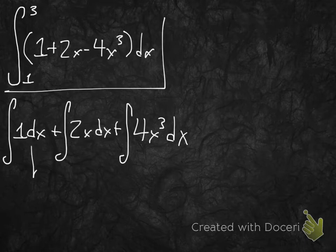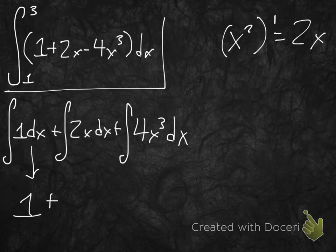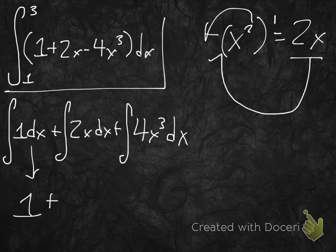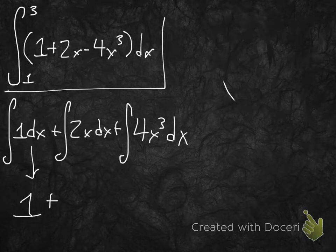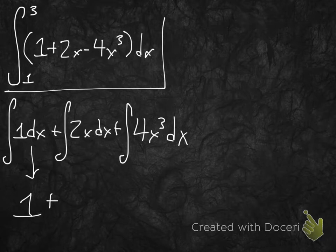For the 2x term: we know x squared prime is always 2x, so by that logic, if 2x is the derivative, we were taking the derivative of x squared. So 2x becomes x squared when we take the antiderivative.